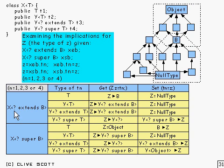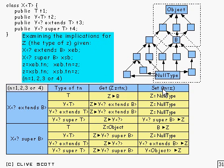What about methods? We've just looked at variables here. When you call a method and set parameters to it, that corresponds to the set case. If you're saving the result and the result type is one of these, that corresponds to the get case. So I don't need to do that separately — it's effectively already been covered.